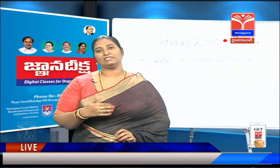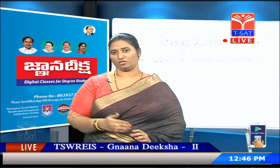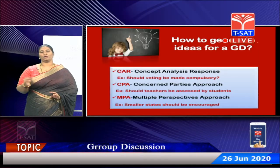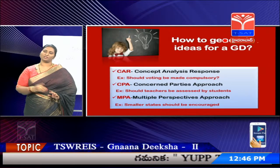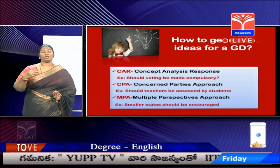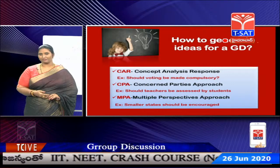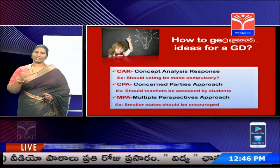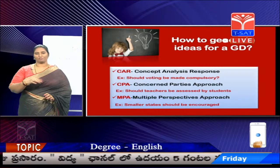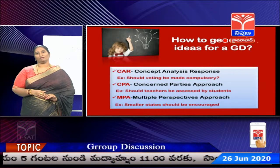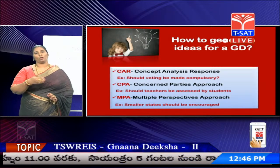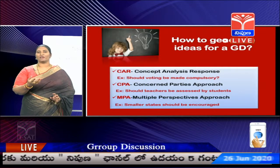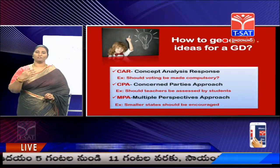The first method is CAR — Concept Analysis Response. Every topic has a concept behind it, a key idea or keyword. For example, 'Should voting be made compulsory?' The concept is voting. Instead of searching that entire phrase, extract the concept and search differently: What is voting? Where is it used? What are the advantages? What are the disadvantages? Give examples of countries with poor voting. Is there a country where voting is made compulsory? This is how you find relevant ideas.